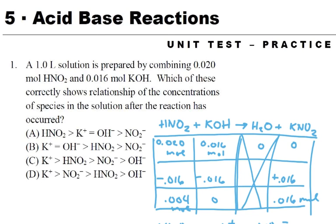I'm going to go through the answers to the unit practice test for unit 5. The first question has a 1-liter solution prepared by combining 0.02 moles of HNO2 and 0.016 moles of KOH. The important thing is how much of each we have — we have a little bit less base than weak acid.